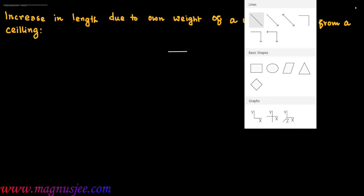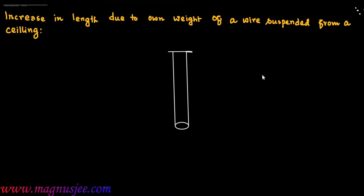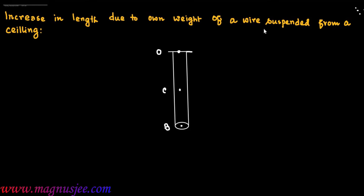This is the ceiling from which a cylindrical wire is suspended. B is the lowest point of the wire and C is the center of gravity of the wire. The wire is suspended from point O, that is from the ceiling. Capital L is the entire length of the wire.